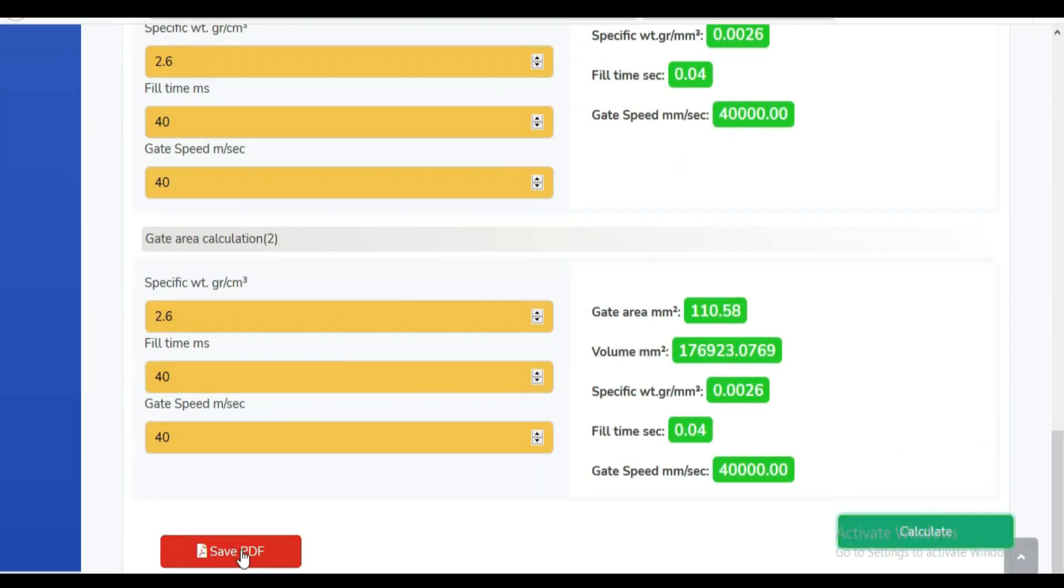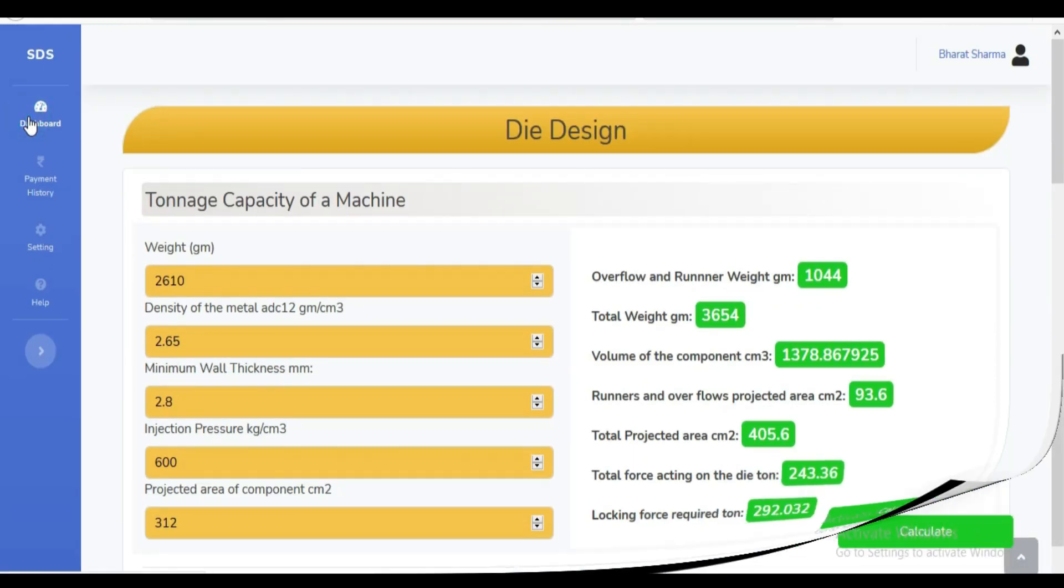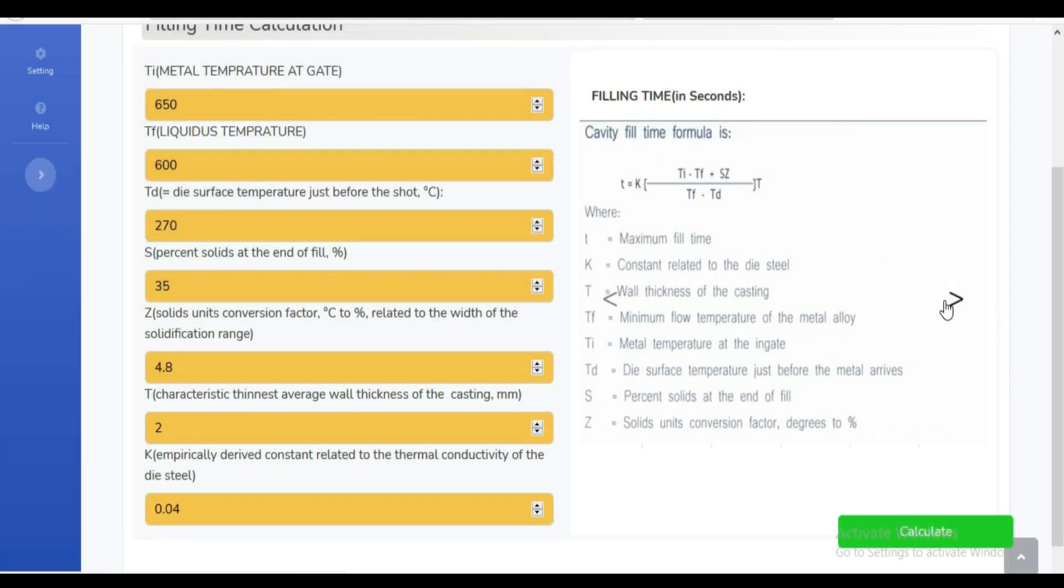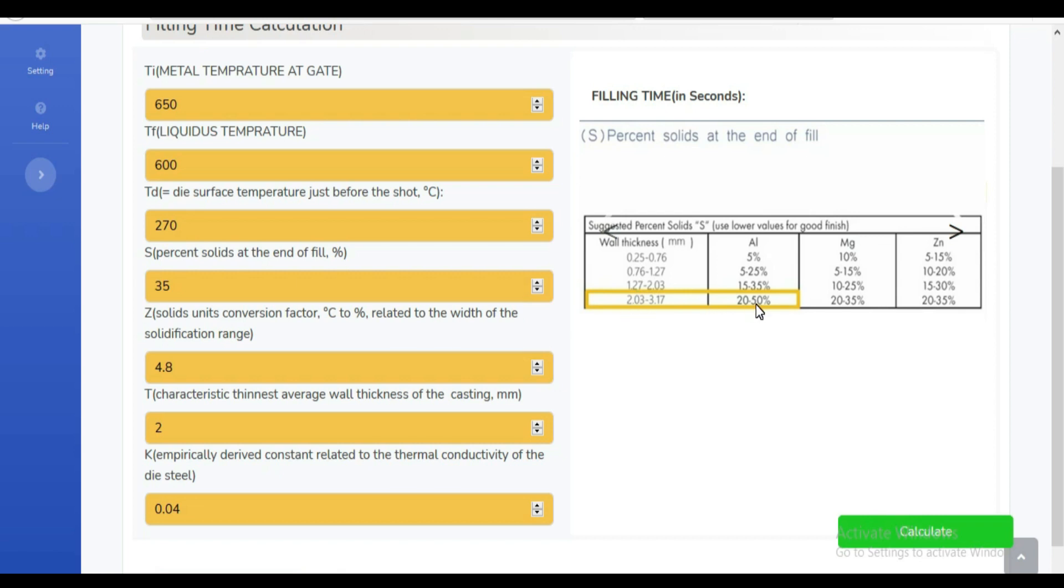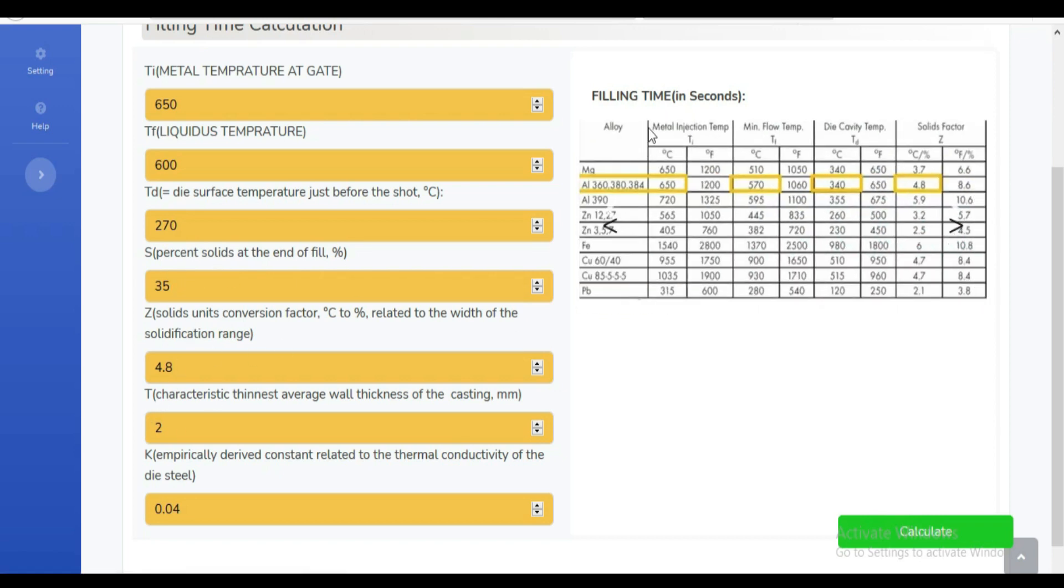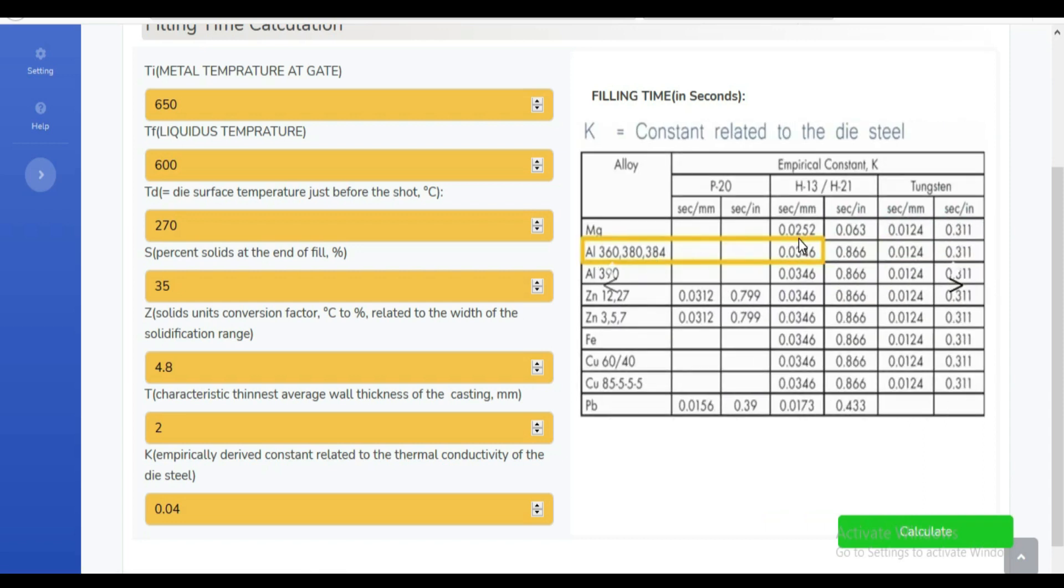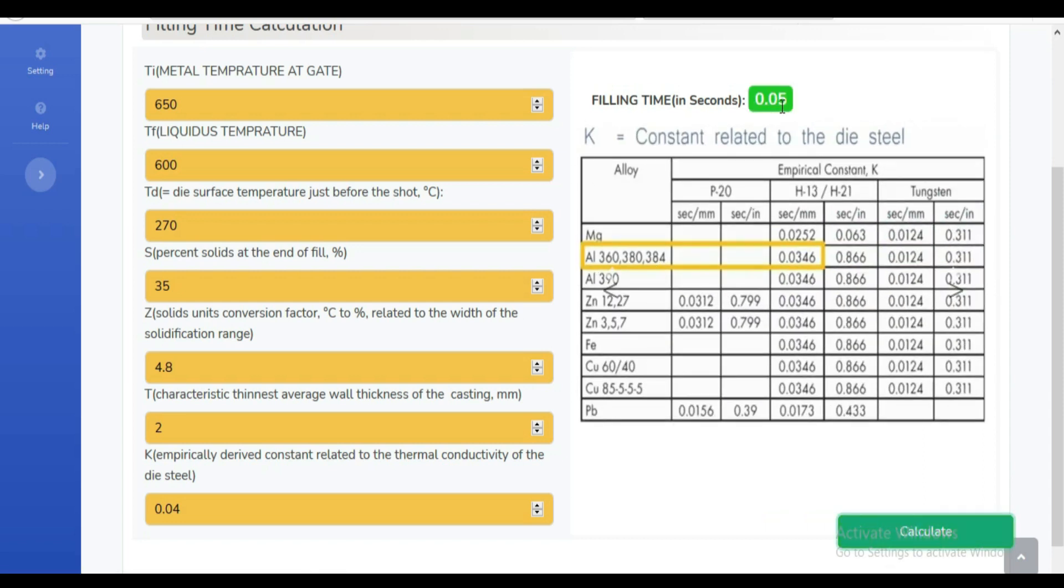One more interesting thing you can do is save or print each and every output report. In the filling time calculation tool, you can calculate your specific cavity filling time. You only have to put few things as per your casting application; some constants you can select from the available table.